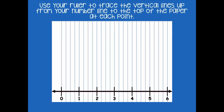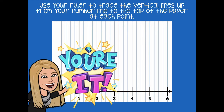We're going to use the ruler to trace vertical lines up from your number line to the top of the paper at each point. So we're going from zero all the way up, and then do the same thing for one, two, three, four, five, and six. Pause the video, do that, and then click play when you're ready for the next step.